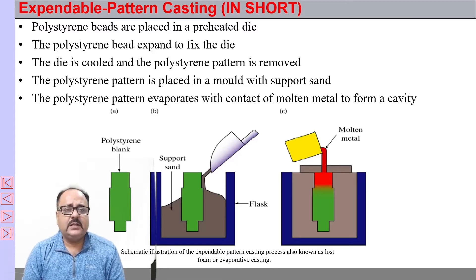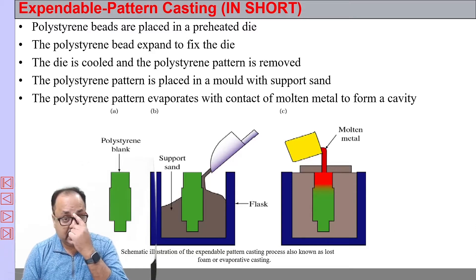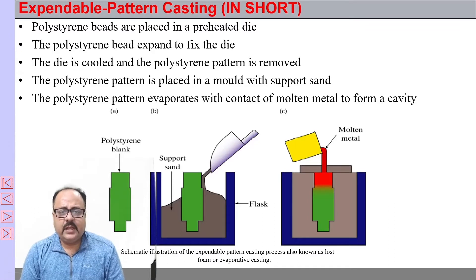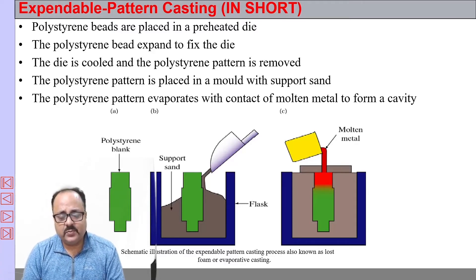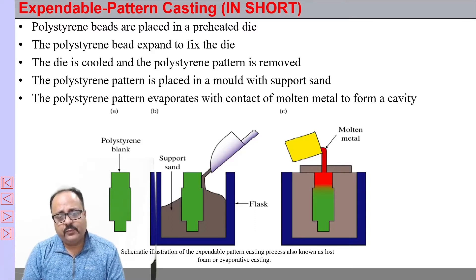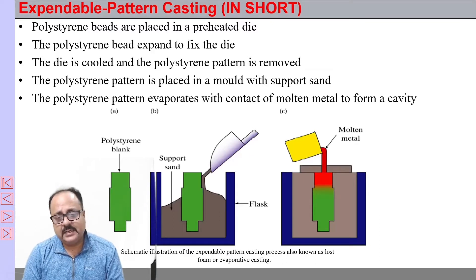We start with evaporative pattern casting or expandable pattern casting. In this process, as the diagram indicates, we use an expandable styrene or EPS — expandable polystyrene — which is basically what we call a thermocol pattern. This pattern is placed in a mold and backed up with fine dry silica sand. Before backing it up, we normally coat the polystyrene blank with a ceramic material and dry silica gel, so that it prevents the entry of silica sand inside the mold.